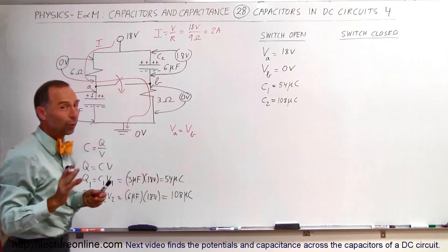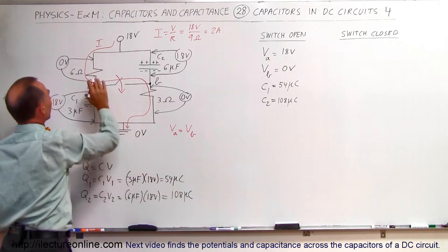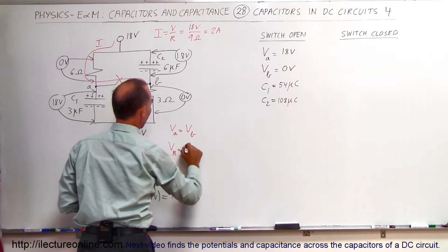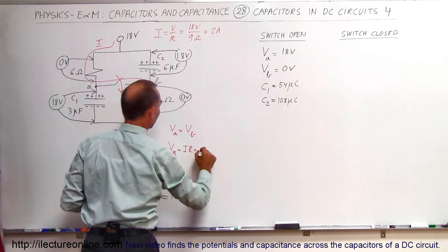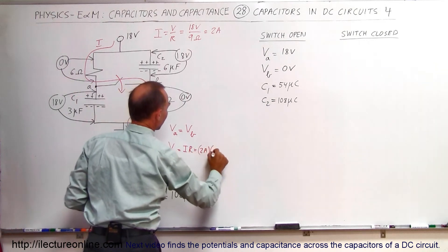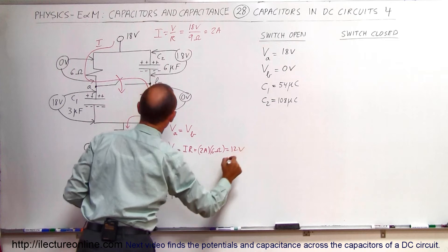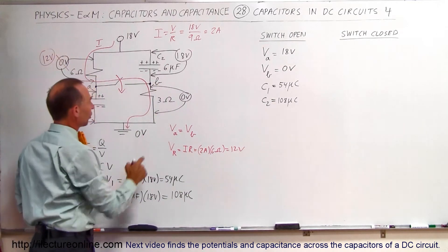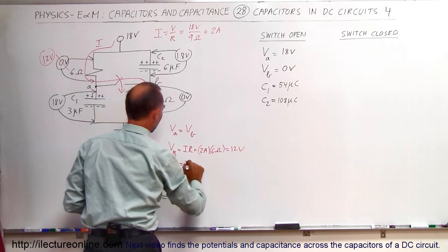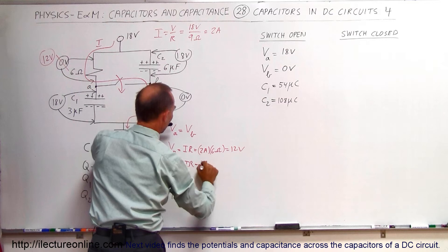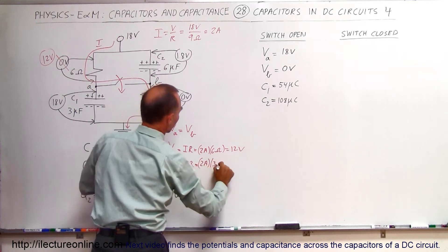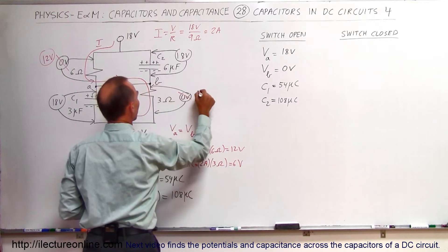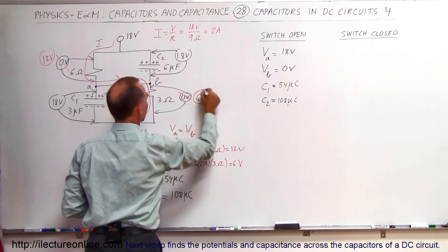So 2 amps of current flows through the circuit. The voltage drop across the 6-ohm resistor is V = I × R = 2 amps × 6 ohms = 12 volts. And the voltage drop across the 3-ohm resistor is V = I × R = 2 amps × 3 ohms = 6 volts.